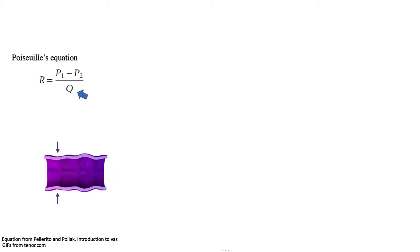Here we see it as P1 and P2. This flow is represented as Q. We see here that for flow to occur, there must be pressure gradients or differences between P1 and P2.